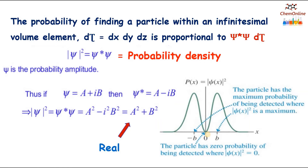When we speak of the physical significance of the wave function, ψ merely represents the amplitude function and hence it has no physical significance. But the real significance of ψ lies in the fact that ψ², which is the probability density,